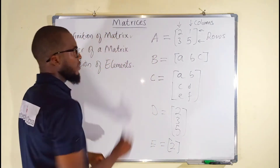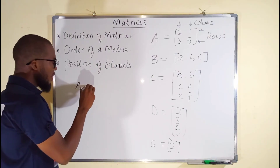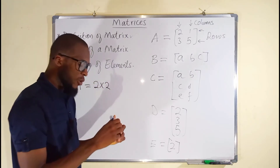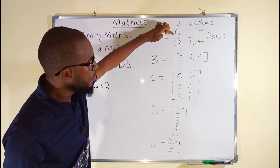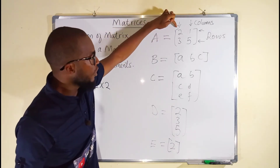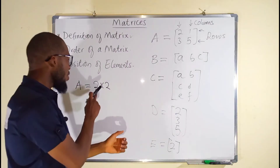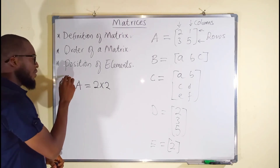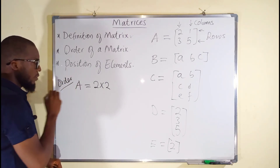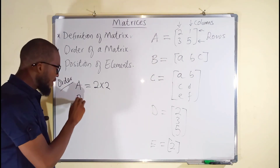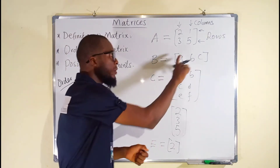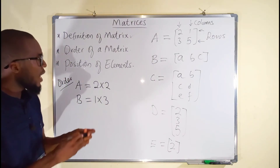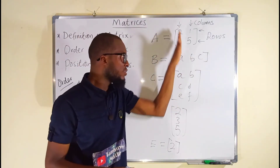Matrix A is of the order two by two. Why? Because this matrix has two rows and two columns — the number of rows by the number of columns. Matrix B is of the order one by three because it only has a single row but has three columns.